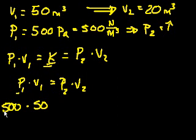So in this case, we have 500 pascals of pressure. The volume is 50 meters cubed. That's going to be equal to the new pressure P2 times the new volume, 20 meters cubed.